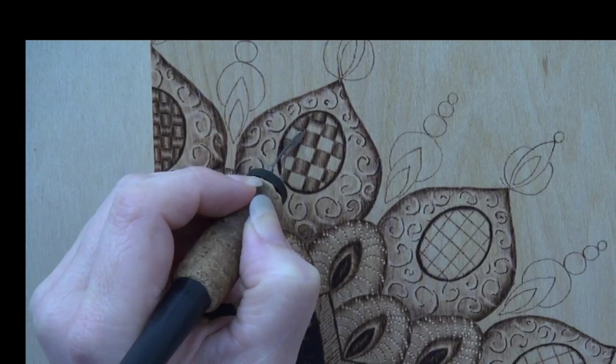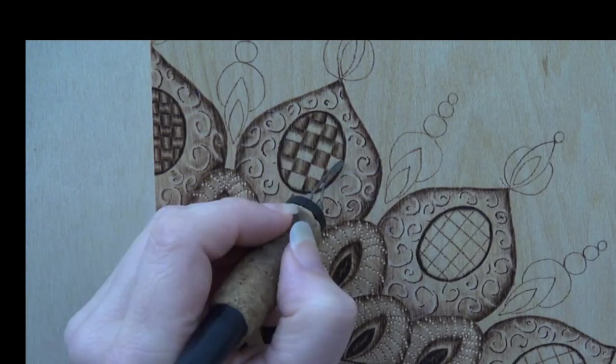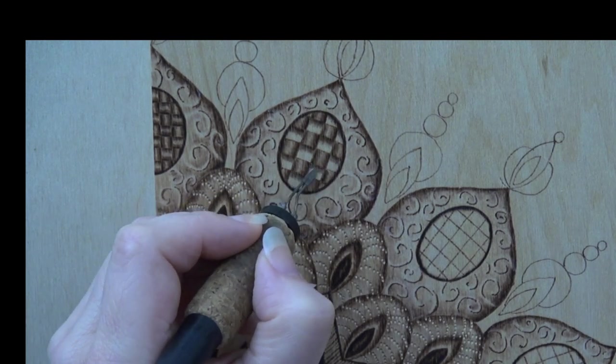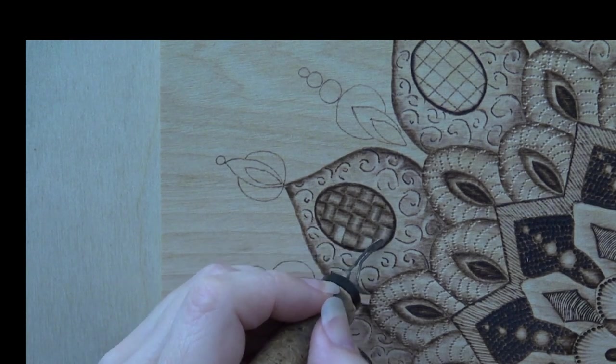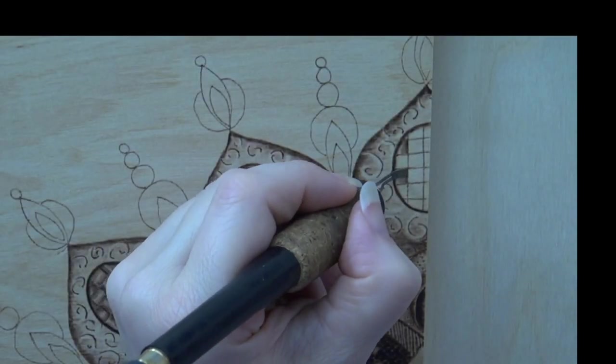Fill in the empty squares with pull-away strokes, but this time burn the strokes in a vertical or up-down direction. When you are done the oval will have a basket weave texture on it.